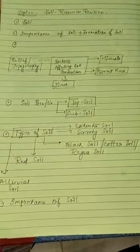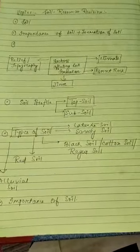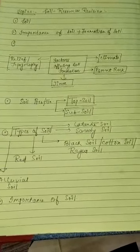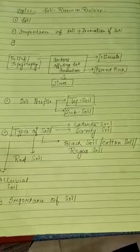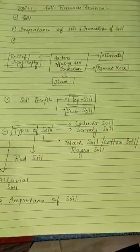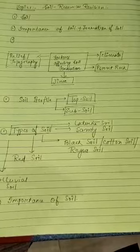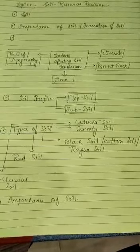First of all, if we are reading about soil resources, what is soil? Soil is the uppermost layer of the earth. The loose particles present on the earth's surface are known as soil.